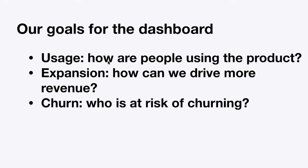Our goals with this dashboard started with just usage — understanding how people are using the product. But as we grew and added more customers, it became the data-driven way we manage customer success, particularly on two axes: expansion and churn. How can we drive more revenue from customers who are using the product but haven't yet rolled it out across their entire practice? And how can we identify who's at risk of churning and actively mitigate that?